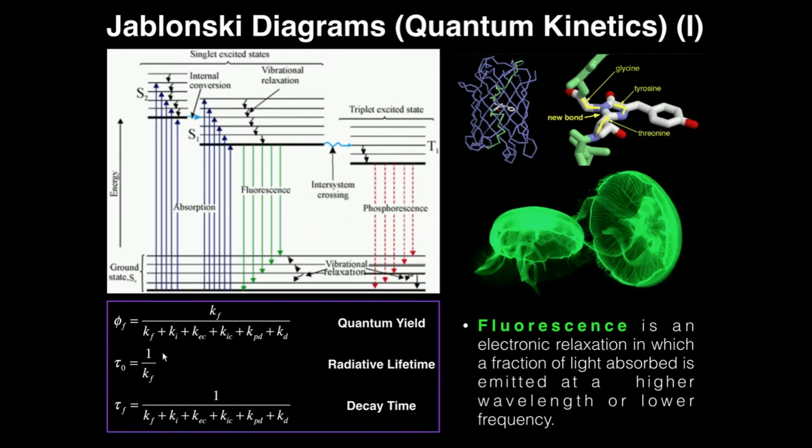Now what we can talk about with all of these processes is the quantum yield of a particular process. A lot of times the quantum yield, which is denoted by the Greek letter phi, the quantum yield is talked about with respect to fluorescence, so phi sub f. What we do is we say that the quantum yield of that fluorescence is equal to the rate constant of the fluorescence divided by the sum of the rate constants for every single process. So for example, kf is fluorescence, ec is external conversion, ic is internal conversion, and there's a bunch of others here. The point is you just add up all the rate constants for each process that can happen, including the one that you're talking about, and then you divide the rate constant for that process by that sum.